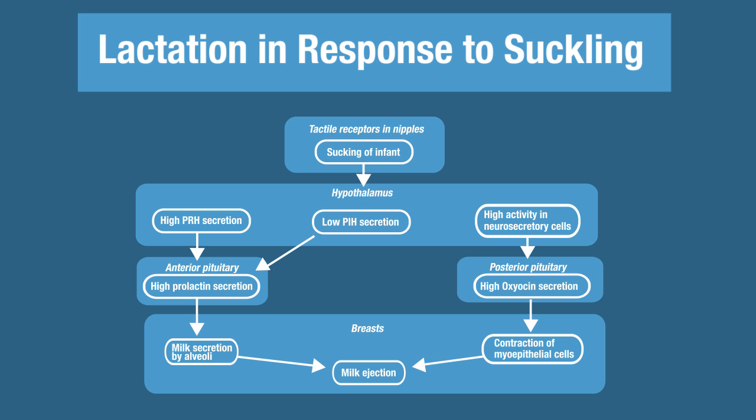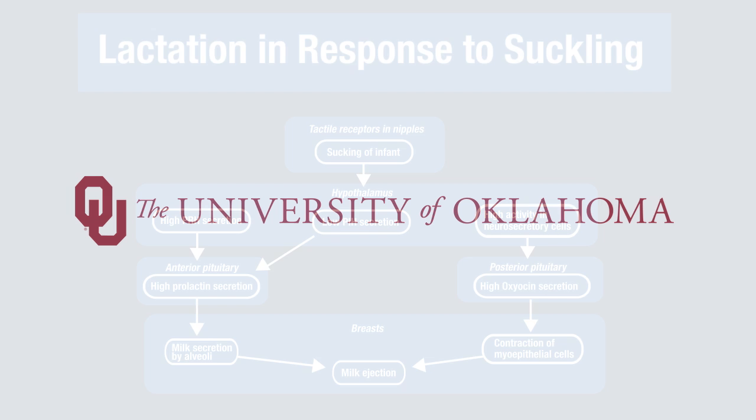The secretion of milk by the alveoli plus the contraction of the myoepithelial cells are together responsible for milk ejection. That concludes the reproductive system.